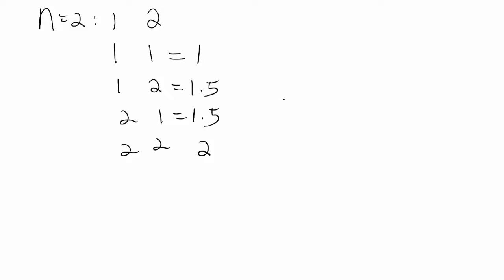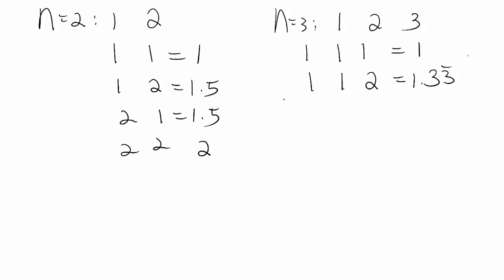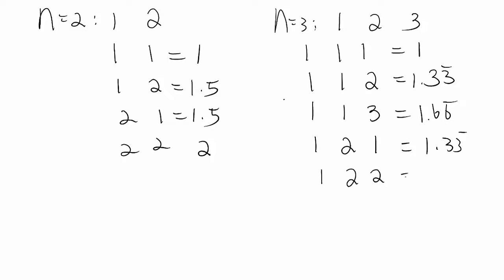But if I make n equal to 3, the cases will be much more. So n equals 3, I'm going to choose only 1, 2, and 3. Then I can generate mean values: from 1, 1, 1 which is 1; then 1, 1, 2 which is approximately 1.67; and also 1.67 again; then 1, 2, 1 which is approximately 1.33; and 1, 2, 2 which is approximately 1.67.